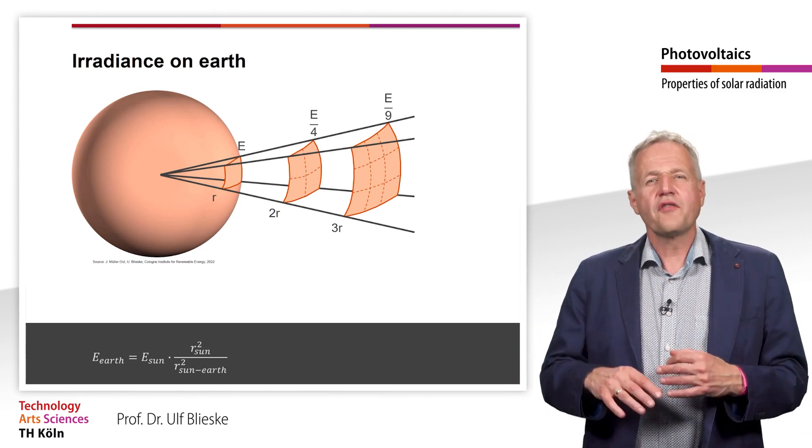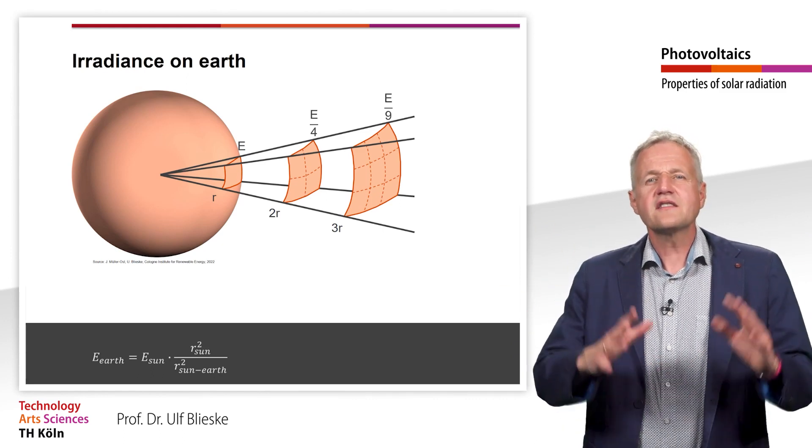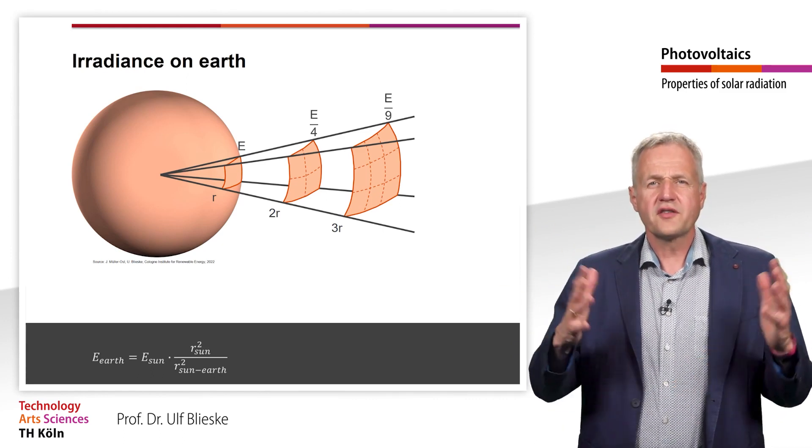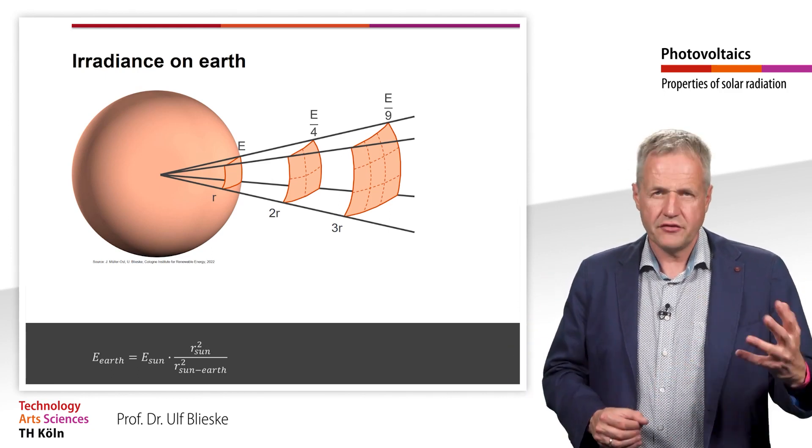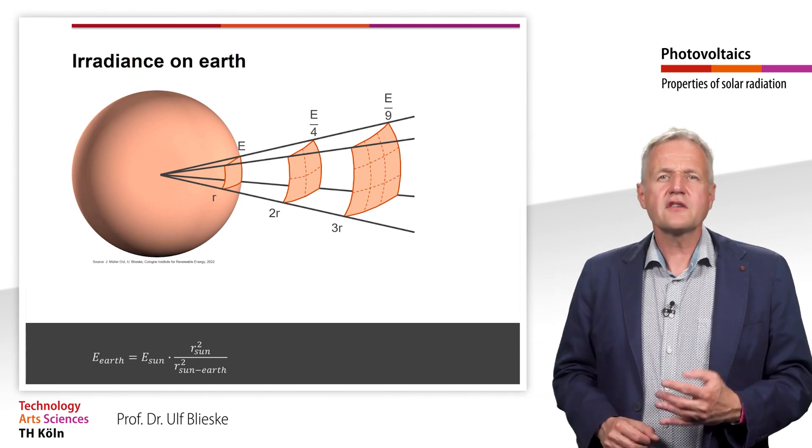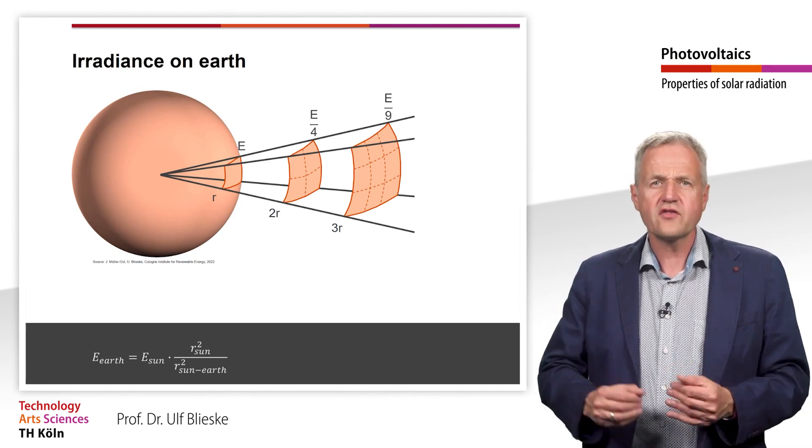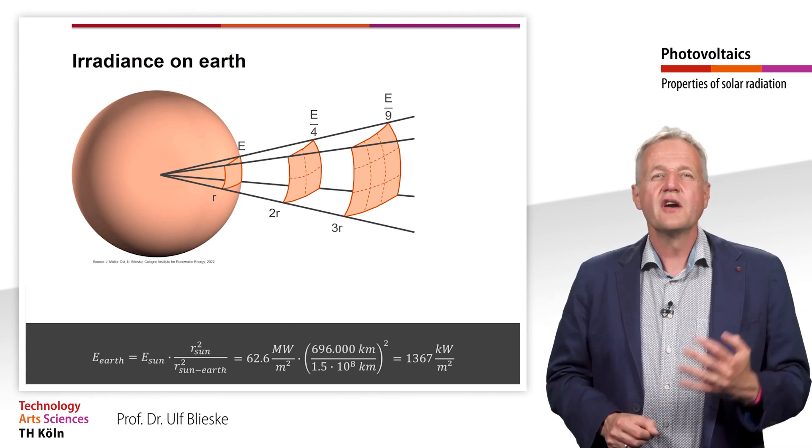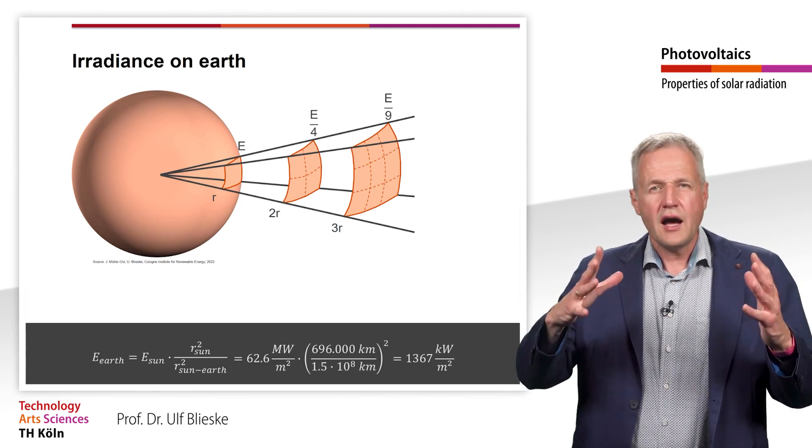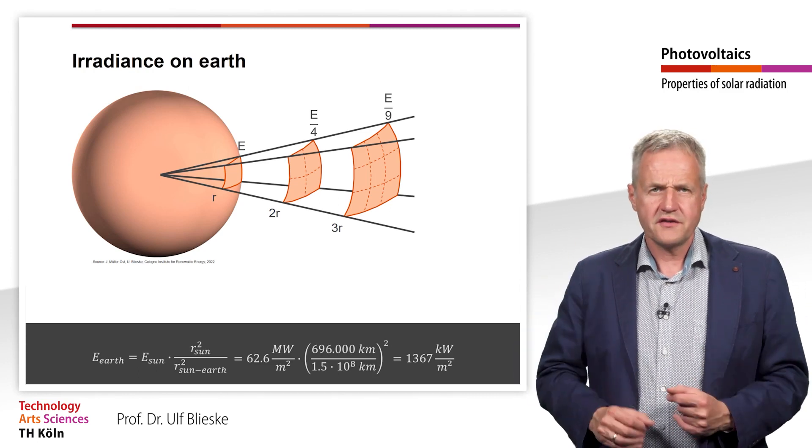The sun has a radius of just under 700,000 km. The distance of the earth from the sun is 150 million km on average. With these values and the just calculated power density on the sun's surface, we get a value of 1367 W per square meter for the irradiance above the earth's atmosphere. This value is also called solar constant.